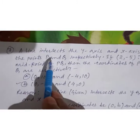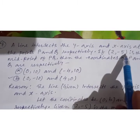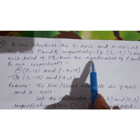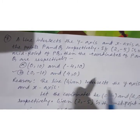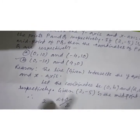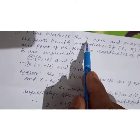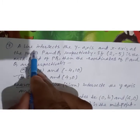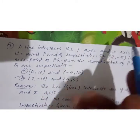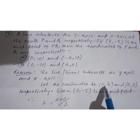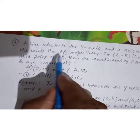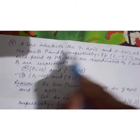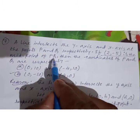A line intersects the y-axis and x-axis at points P and Q respectively. If (2, -5) is the midpoint of PQ, find the coordinates of P and Q. Since P is on the y-axis, let P = (0, b), and since Q is on the x-axis, let Q = (a, 0). Given that (2, -5) is the midpoint.